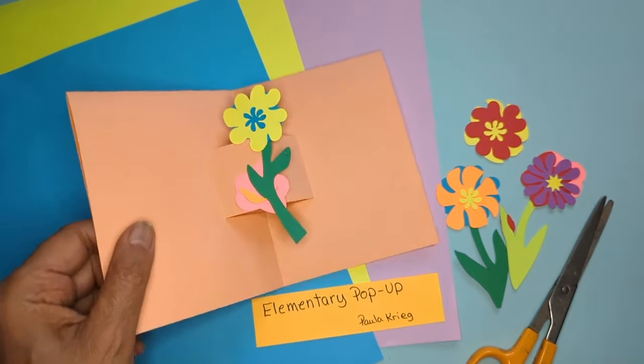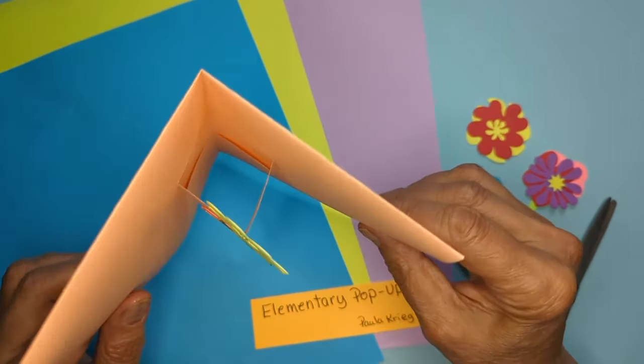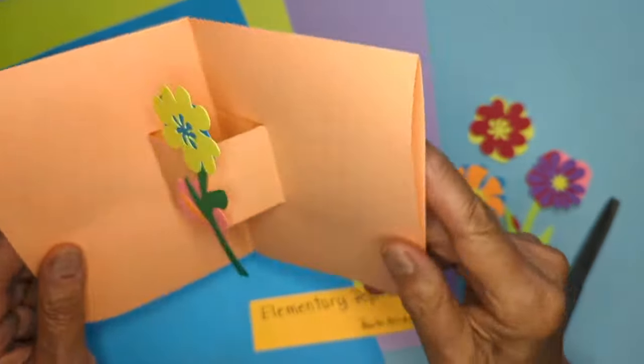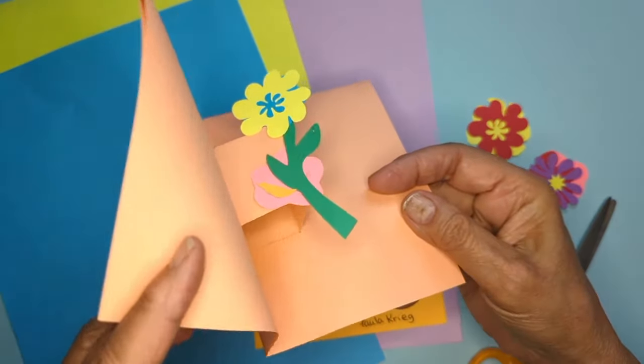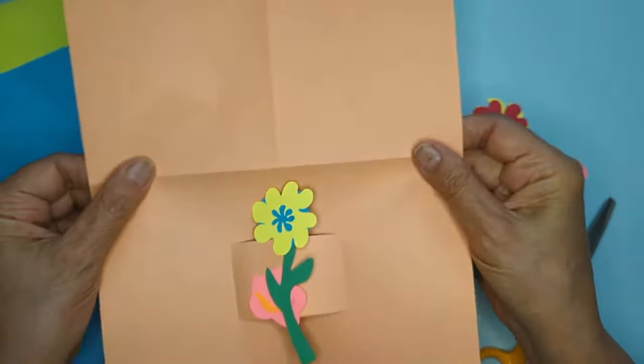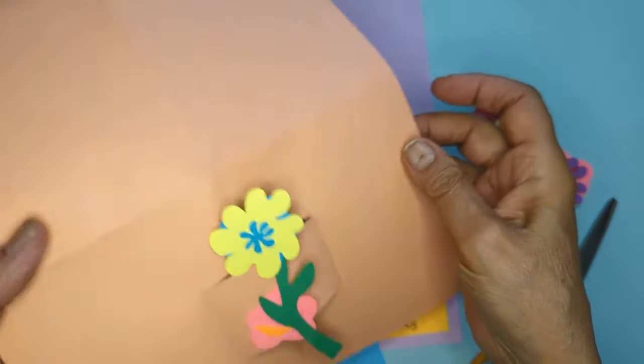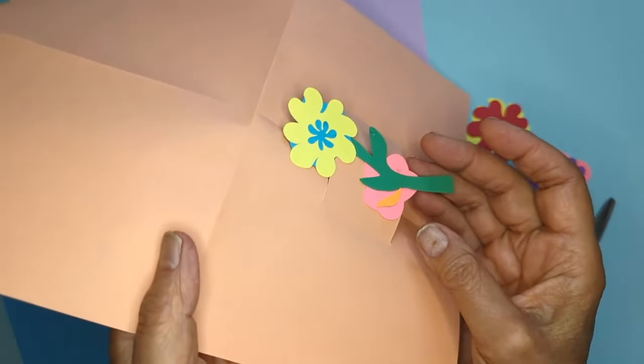If you want to get started making pop-ups, making a box pop-up is a great place to start. You see this is just a box that's popping out and I've glued a flower onto it. This starts with a full sheet of paper and I've used only half the paper for the pop-up, the lower half of the paper.